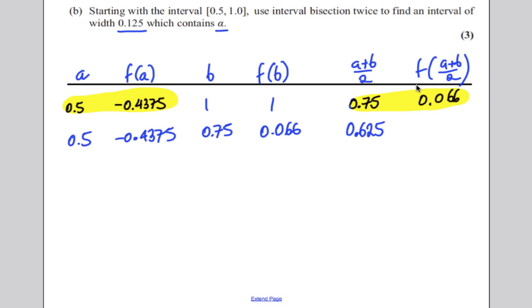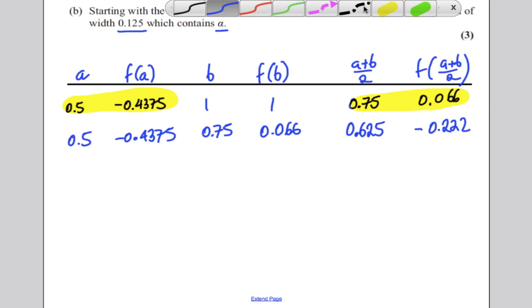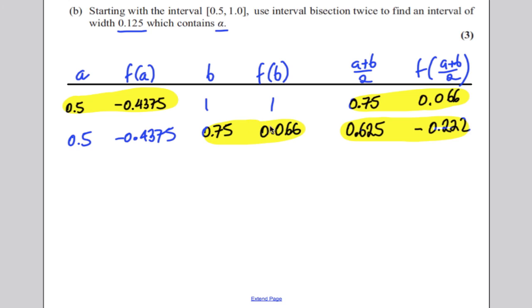So then you're going to work out the value of the function at 0.625, and you get yourself negative 0.222. You always keep this one here, so that's a negative, so you're looking for the one that was positive, and the one that was positive was there.